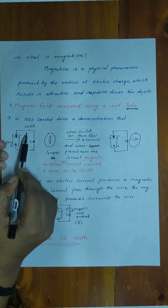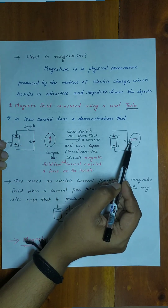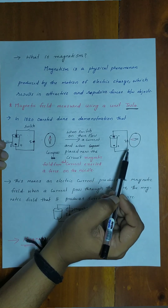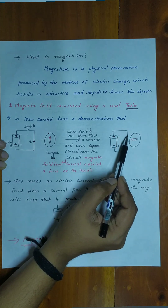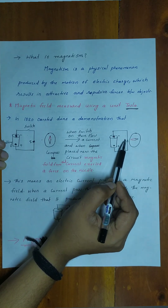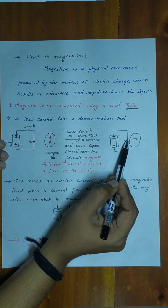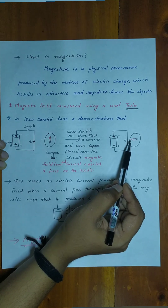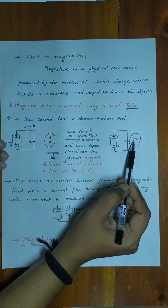When the current switch is turned on the other way, the magnetic needle deflects in the opposite direction. By completing the circuit, there is a current flow, and because of that current flow, it produces a magnetic field. That magnetic field exerts a force on the needle.